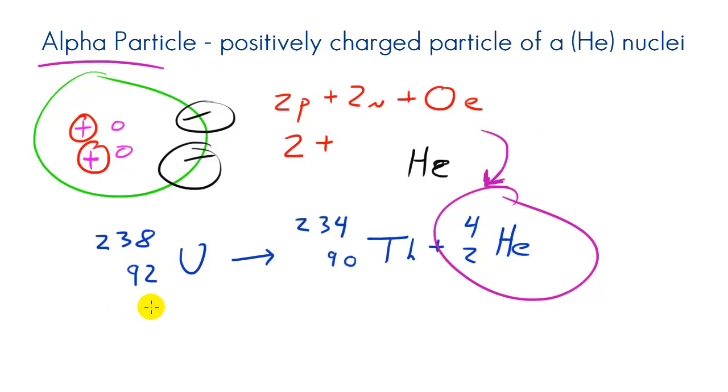So again, to recap one last time, sometimes you have 238-92 uranium and it breaks apart the nucleus. So it breaks into two different elements. One is 234-90 thorium and your other is your alpha particle which is 4-2 helium without any electrons. And then that alpha particle is going to go whizz around and find up two electrons and it's going to become a stable 4-2 helium atom.